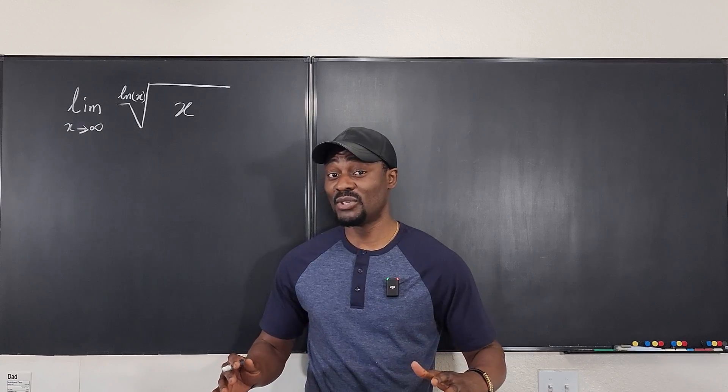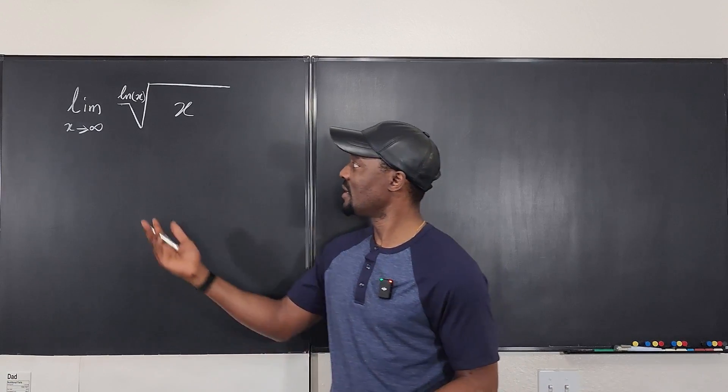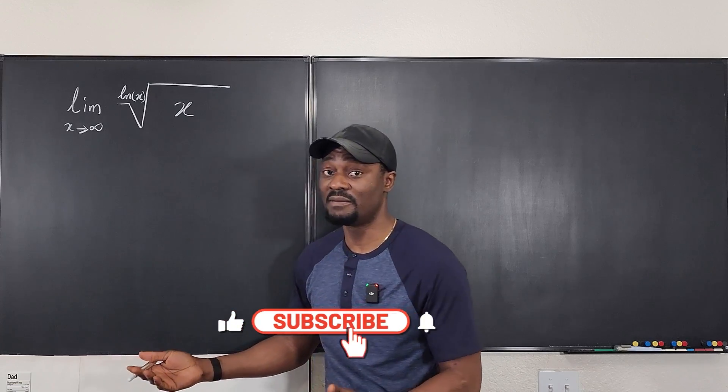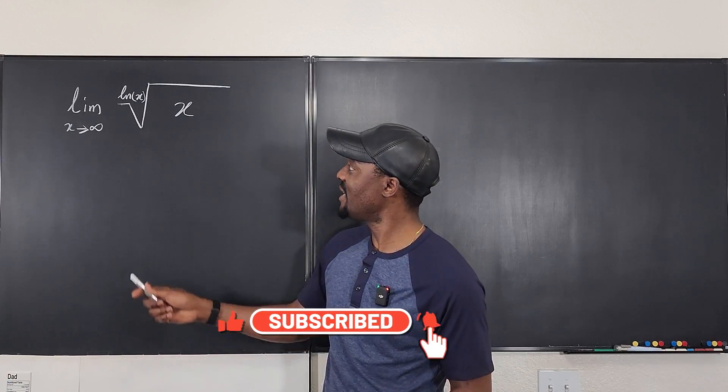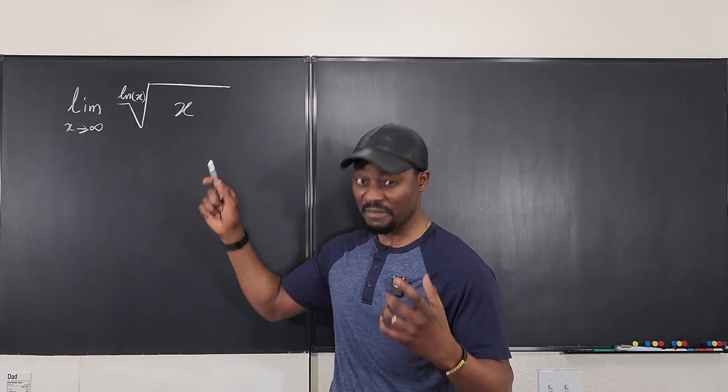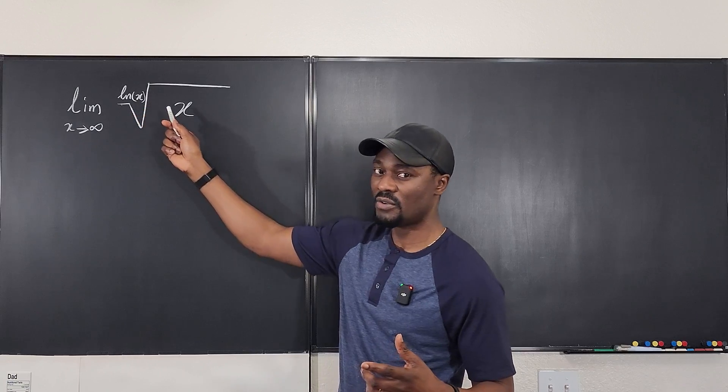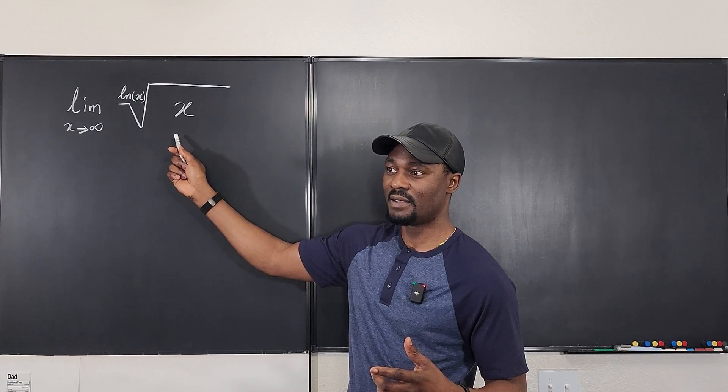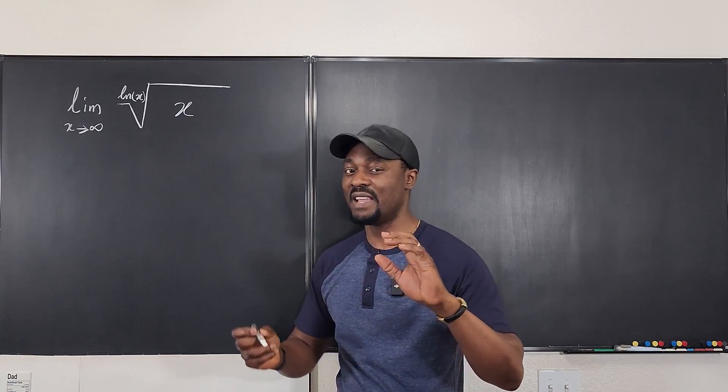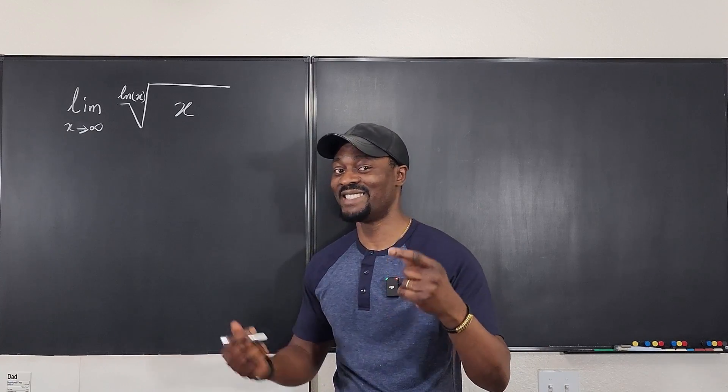It is absolutely impossible for me to take this limit just the way it is because again, this is infinity. So I can't plug in infinity. So what I can say is, well, as x goes to infinity, the natural log of x goes to infinity also. So you're taking the infinite root of infinity. I don't know how that looks, but let's see if we can simplify before taking the limit, and then you'll see the surprise in the problem.